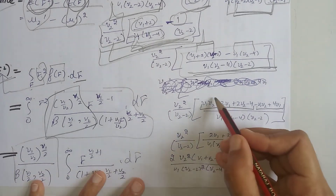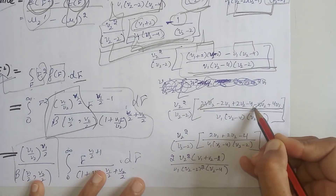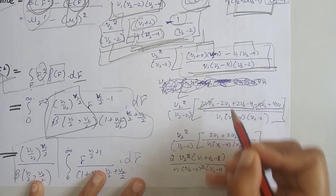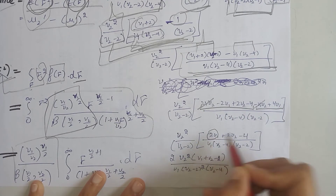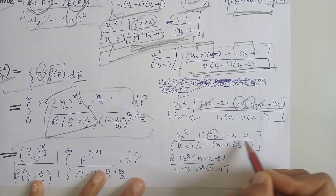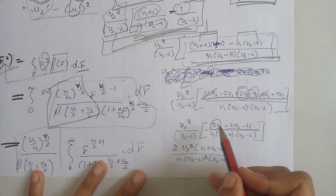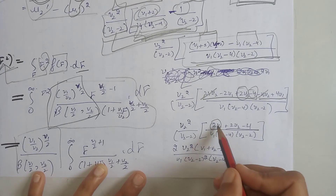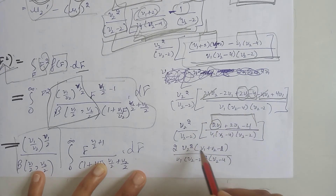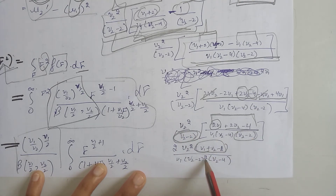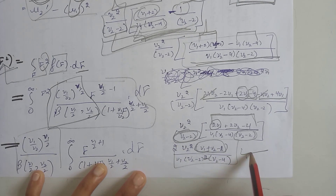Taking the LCM of the two terms, we multiply out the brackets. Expanding gives four terms from the first bracket and two from the second. After cancellation, 2ν₁ minus 2ν₁ leaves remaining terms. Taking a factor of 2 common from three terms and simplifying, the final result is the variance of the F-distribution.